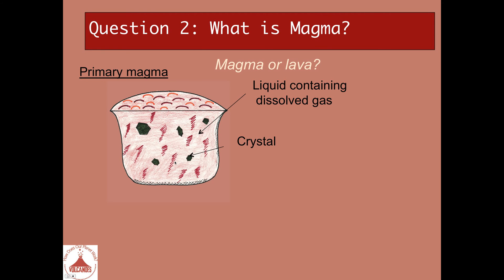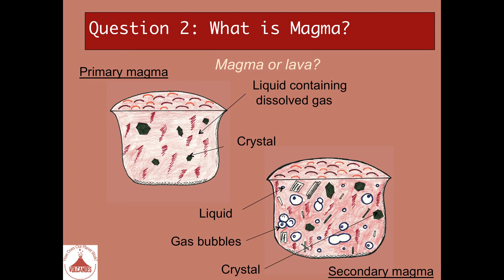When such a magma approaches the surface of the Earth, where you have lower temperatures and pressures, this dissolved gas appears as bubbles — gas bubbles, small ones and bigger ones, or groups of bubbles. And it means that the gas dissociates from the liquid. So now you can observe liquid, gas bubbles, and crystals.